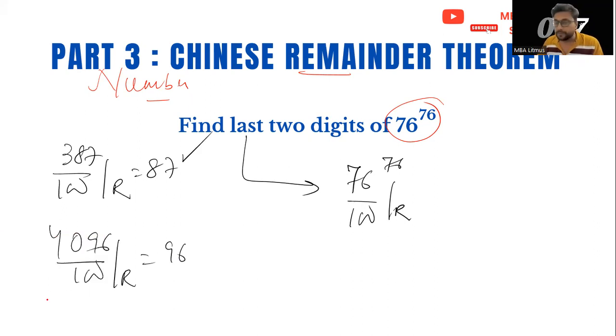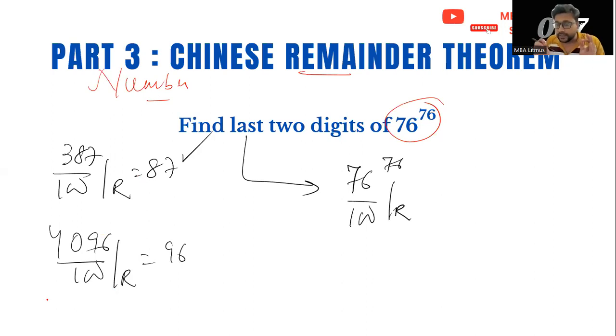Once I have written it in this form, what do we do under Chinese Remainder Theorem? In the denominator we have 100. The first step is to split this number into multiple of co-prime numbers. What are co-prime numbers? The numbers whose HCF is one. For example, 25 and 4. I can split this number as 25 into 4, and these are co-prime numbers.